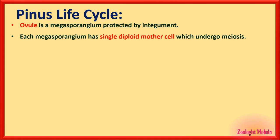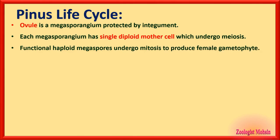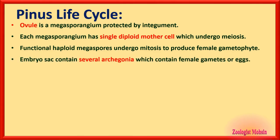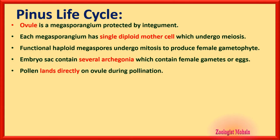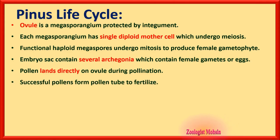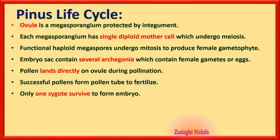In the Pinus life cycle: the ovule is a megasporangium protected by an integument, which is a protective coat. Each megasporangium has a single diploid mother cell; when it undergoes meiosis it produces haploid functional megaspores, which undergo mitosis to produce the female gametophyte or embryo sac. The female gametophyte contains several archegonia which contain female gametes or eggs. Pollen lands directly on the ovule during pollination — that is a very important fact for gymnosperms.